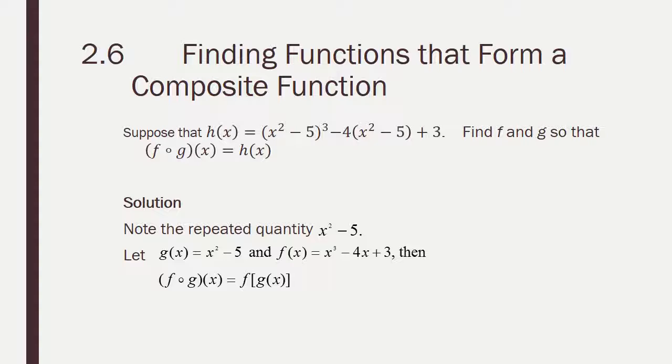Now, how do we work this backwards? In other words, I've got a function that's been composed, and I want to pull it apart into two separate functions that, when put together, give me that result. Well, if you look at this, you'll notice that in h of x, we've got x squared minus 5, in there twice. That's a really big hint. That would be a really great candidate for one of our two functions, for our inside function, in fact. So, we're going to let g of x be x squared minus 5. Now, what happens to x squared minus 5? Well, it gets cubed, and it gets multiplied by 4. So, our outer function is going to be x cubed minus 4x, and then plus 3. And that gives us the two functions that, when we put them together as f of g of x, gives us what h of x is.